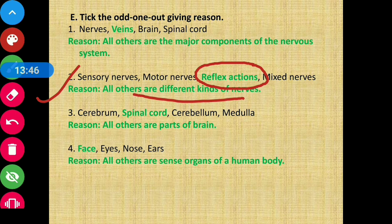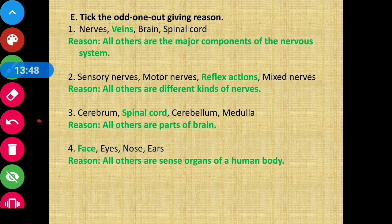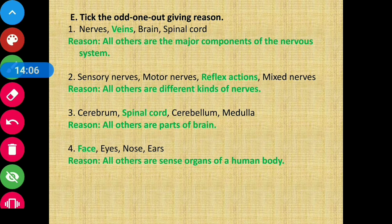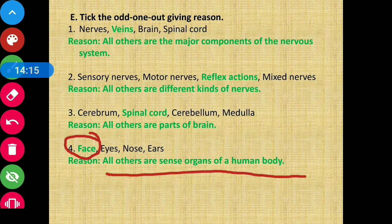Question 3: Cerebrum, spinal cord, cerebellum, medulla — spinal cord is the odd one out because all others are parts of the brain. Question 4: Face, eyes, nose and ears — face is the odd one out because all others are sense organs of the human body.